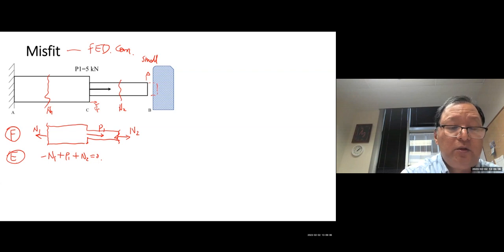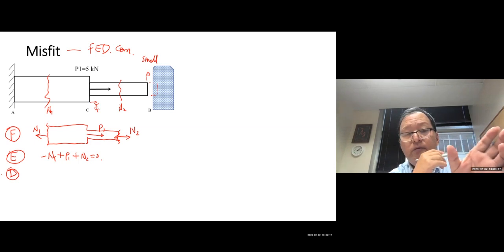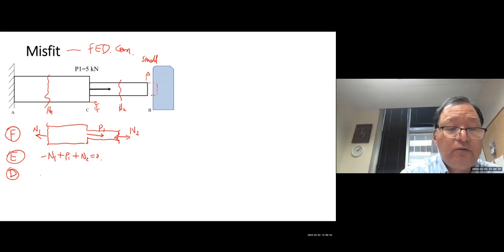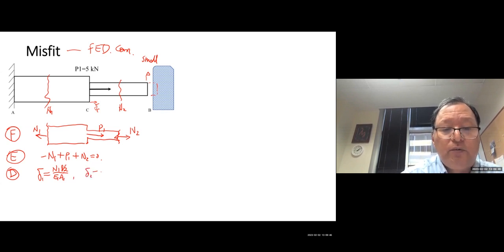For deformation equations: bar AC deforms by delta_1 = N1·(L/2) / (E·A), and bar CB deforms by delta_2 = N2·(L/2) / (E2·A2). The material and cross-sectional area can be the same or different — either way the approach is the same.